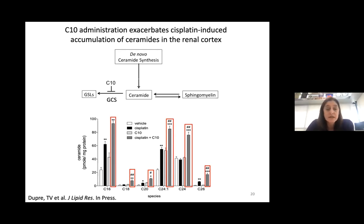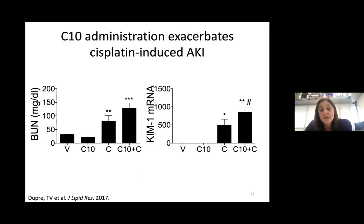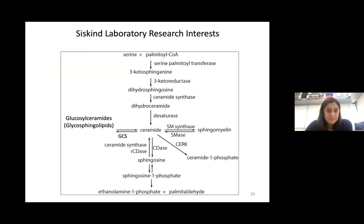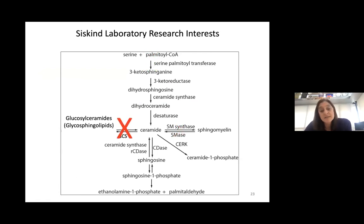When we measured kidney function by blood urea nitrogen or KIM-1 — an injury molecule specifically made in the proximal tubules — we found that blocking glucosylceramide synthase actually made the damage worse. This suggests that ceramide is contributing to the injury, and that glucosylceramide synthesis is allowing the system to buffer ceramide levels and inhibit ceramide's ability to exacerbate injury. If interested in the full biology, I point you to the 2017 JLR paper.